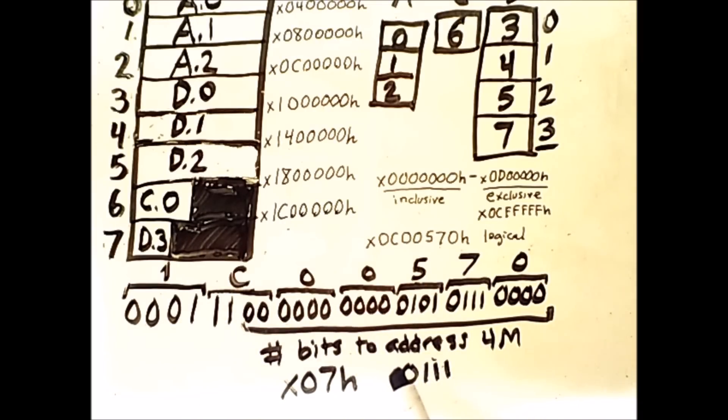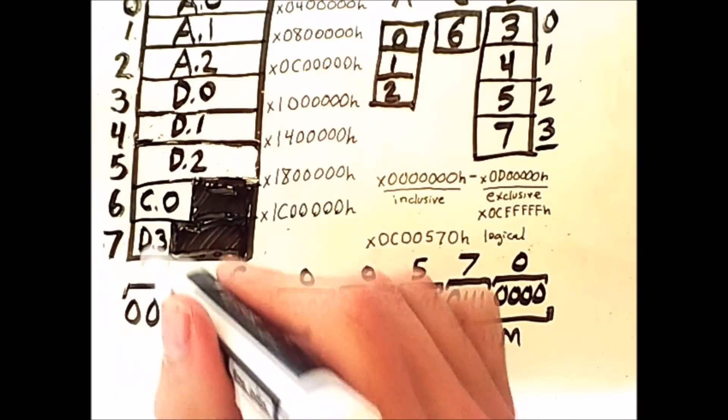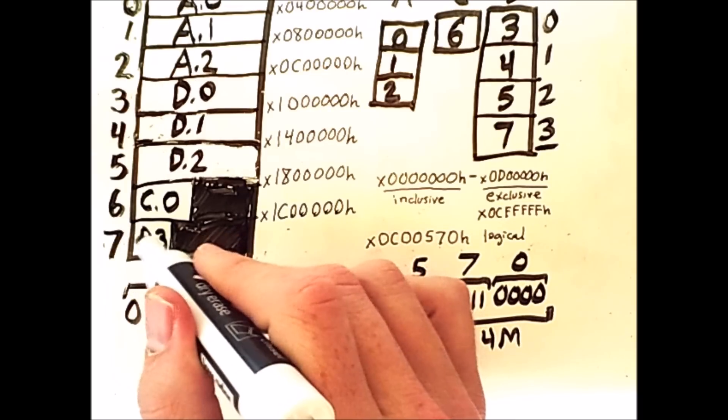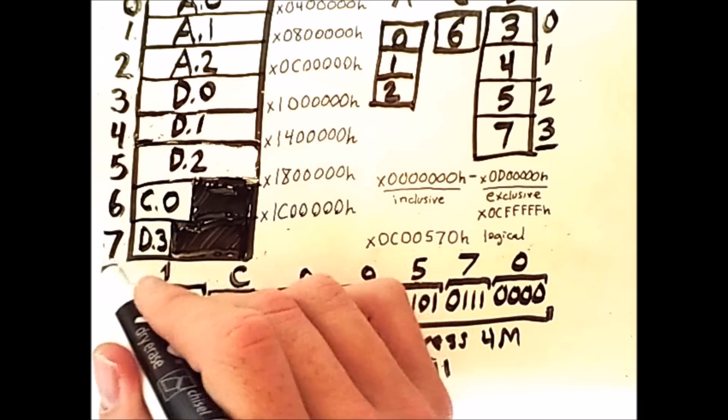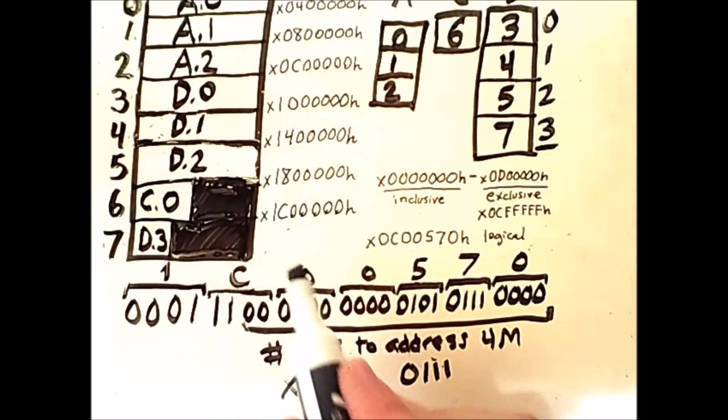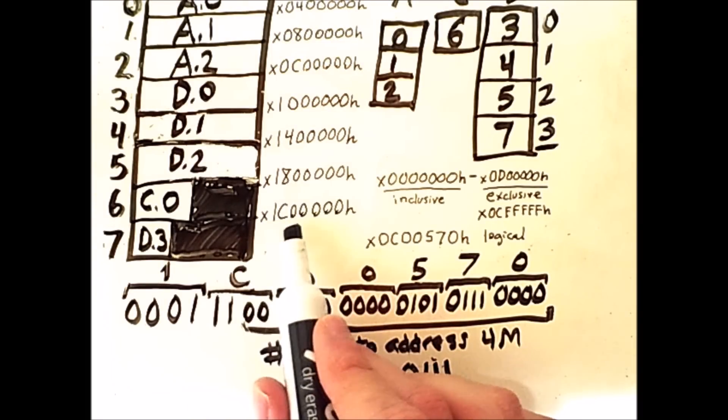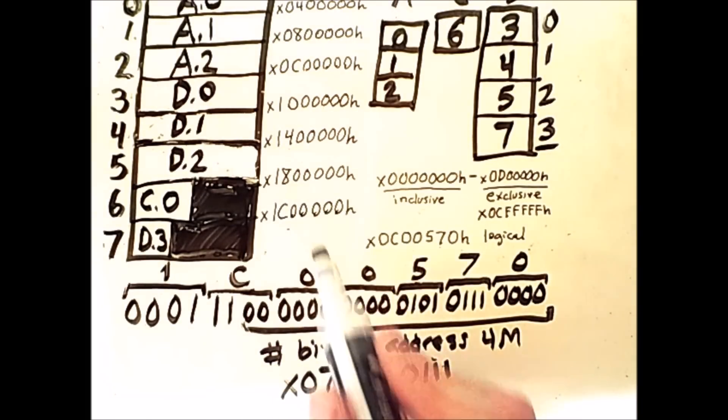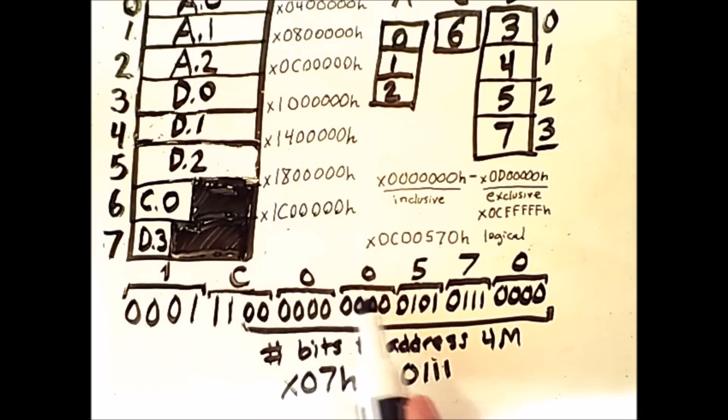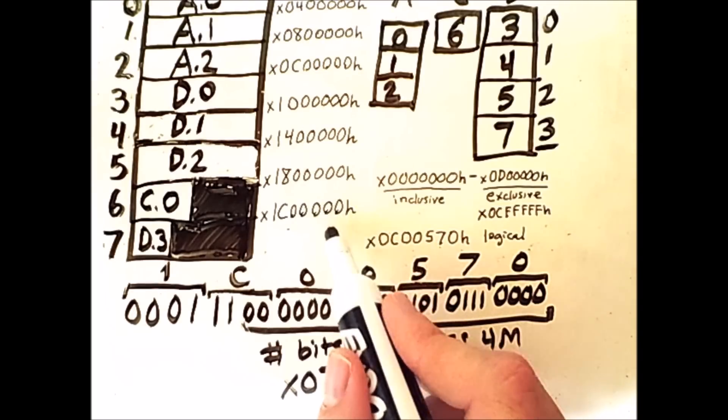So as we expected, the actual physical location of that logical address was going to be somewhere in page 3 of the process, which is in frame 7 of memory. So this memory address here is 0x1C00000, and it turns out that this logical address we're trying to access is slightly after that, at 0x1C00570. So just below that address.